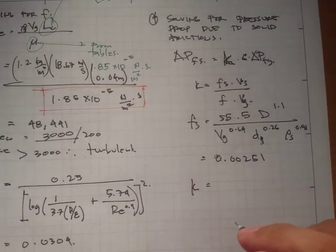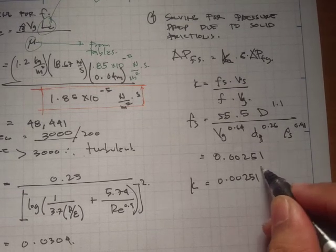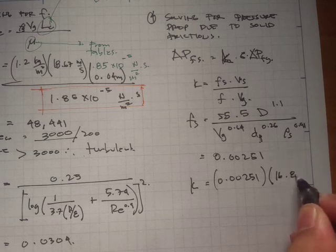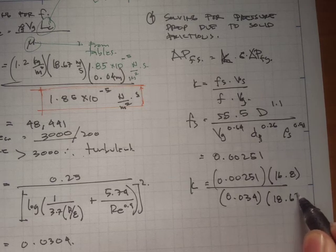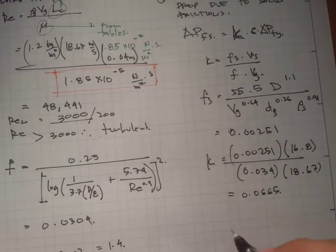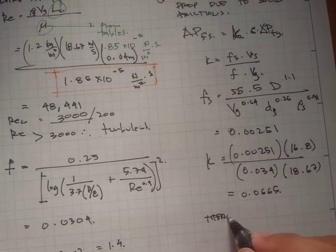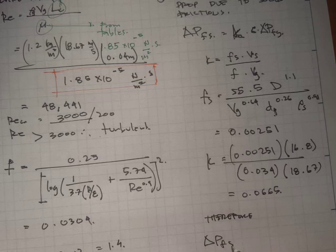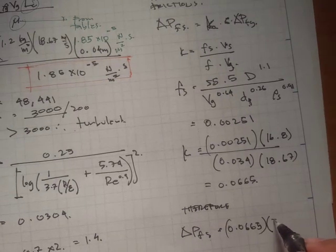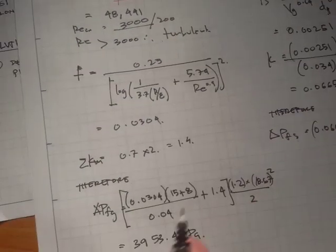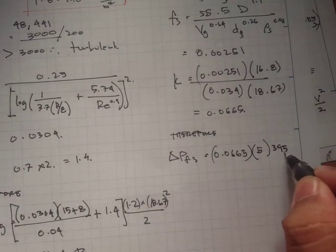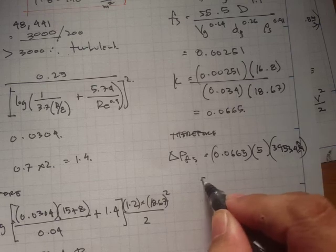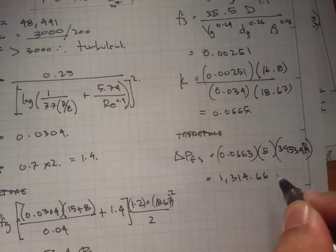Using F_s = 0.00251, we calculate K = 0.00251 times V_s divided by f times V_g = 0.0665. Therefore, ΔP_FS = K times solid loading times ΔP_FG = 0.0665 times 5 times 3,953.4 Pa, giving 1,314.66 Pascals.